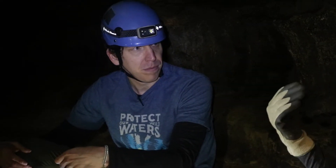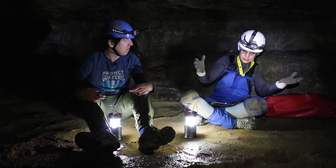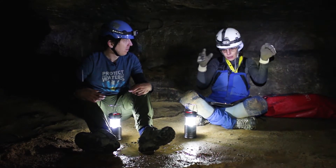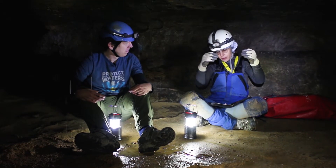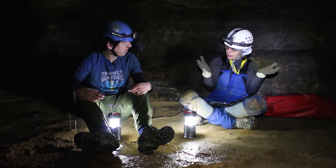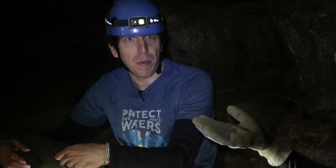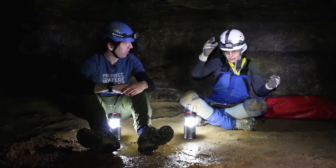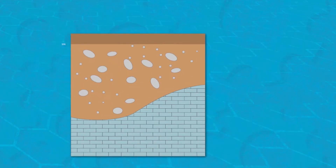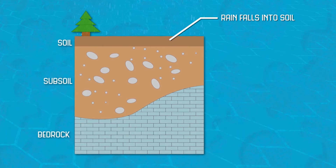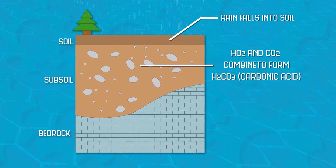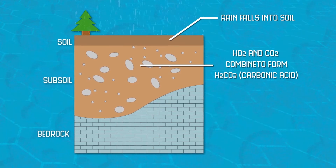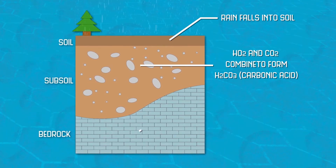There are animals in the soil breathing in oxygen and breathing out carbon dioxide. That carbon dioxide combines with the water and makes a weak acid called carbonic acid. As the water brings the carbonic acid down through the soil and into the rocks, it hits the limestone and reacts with it.